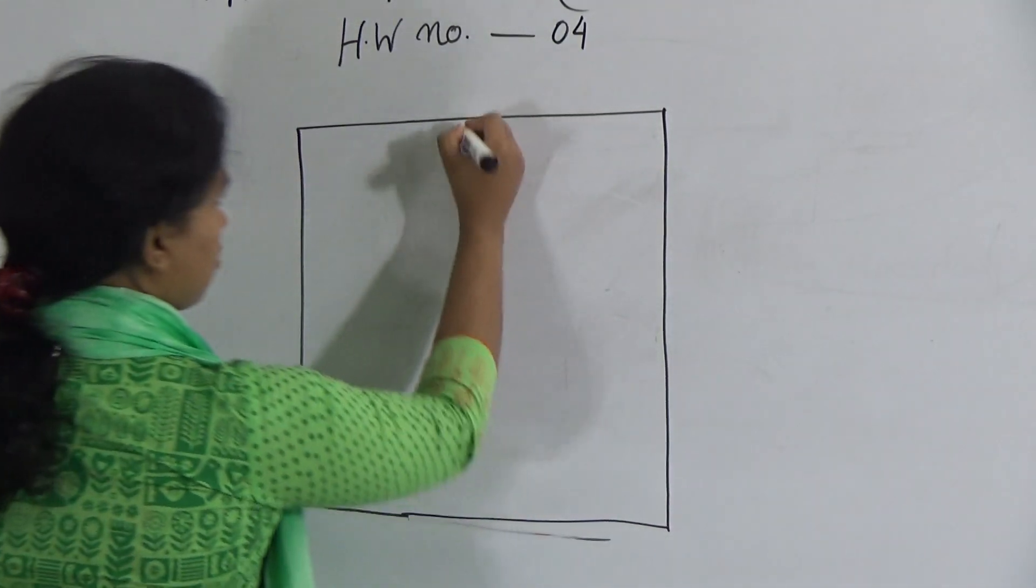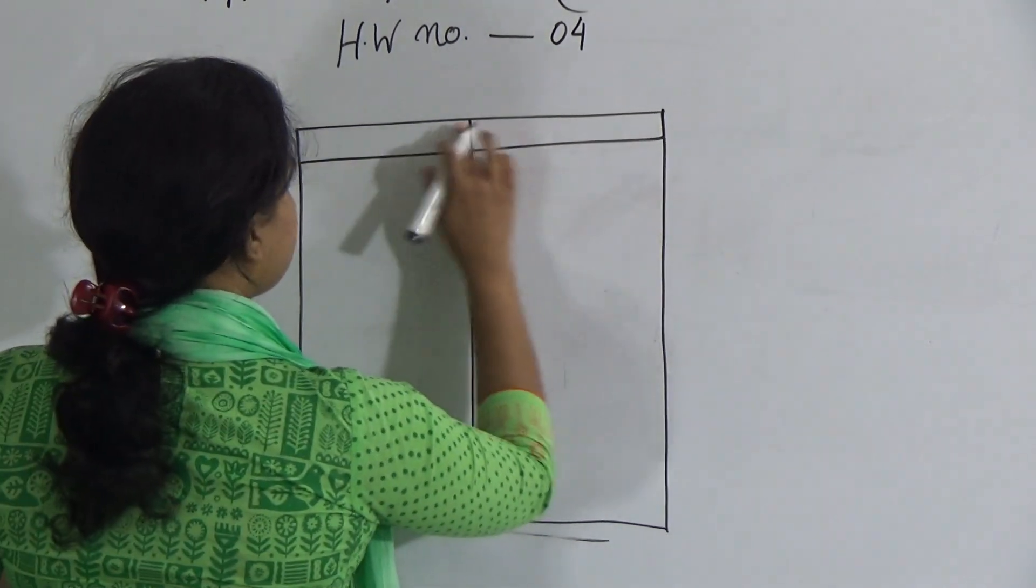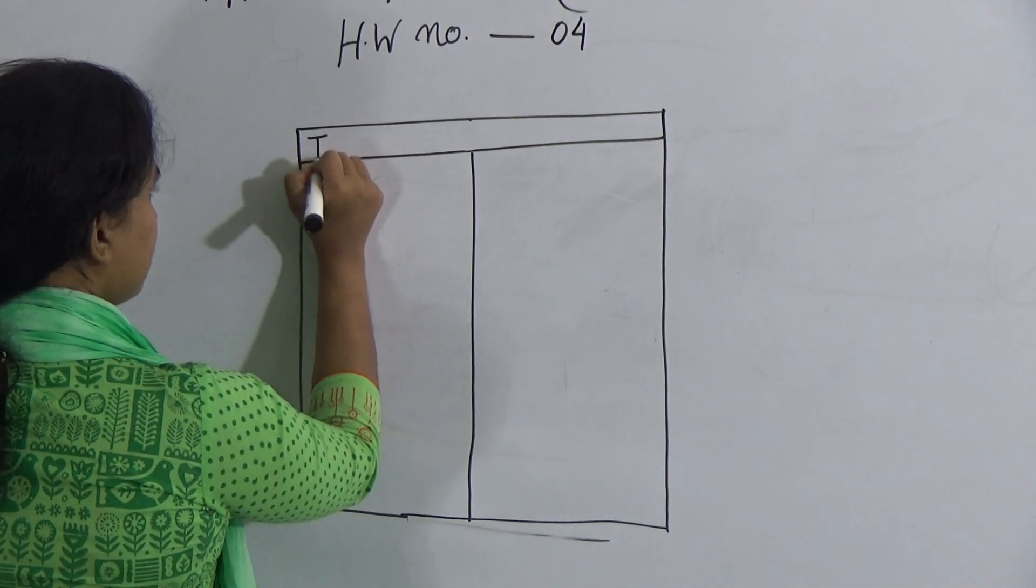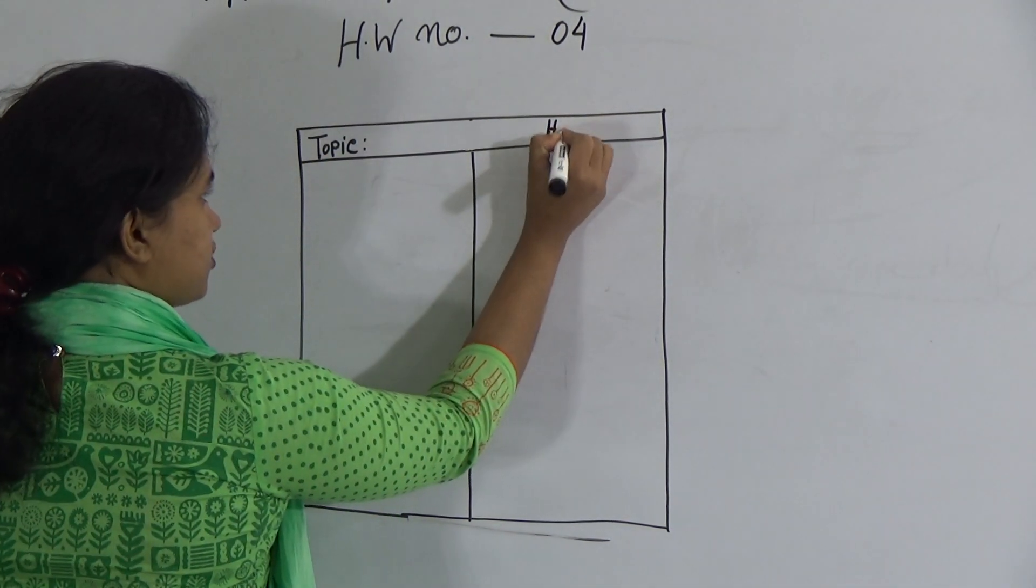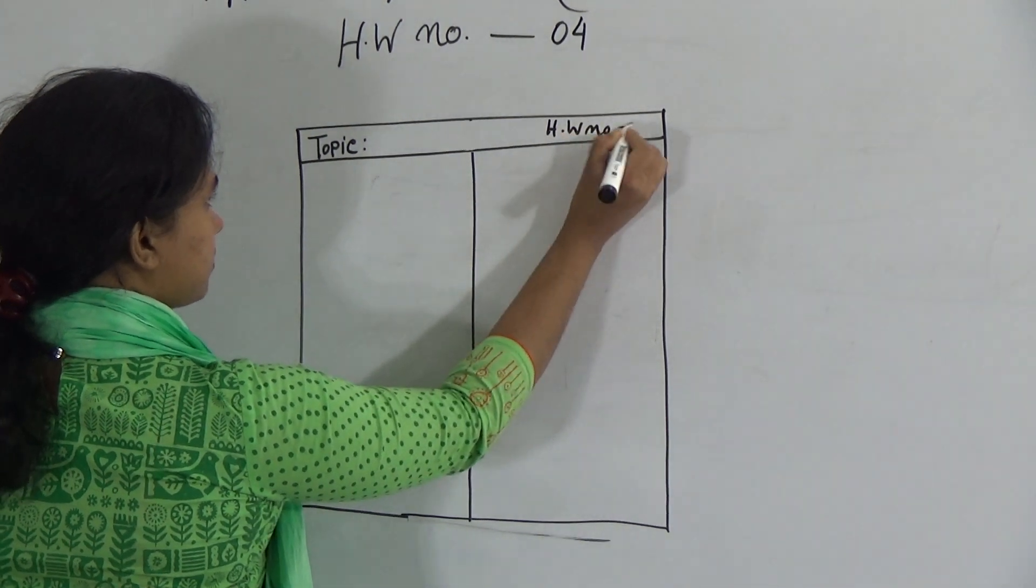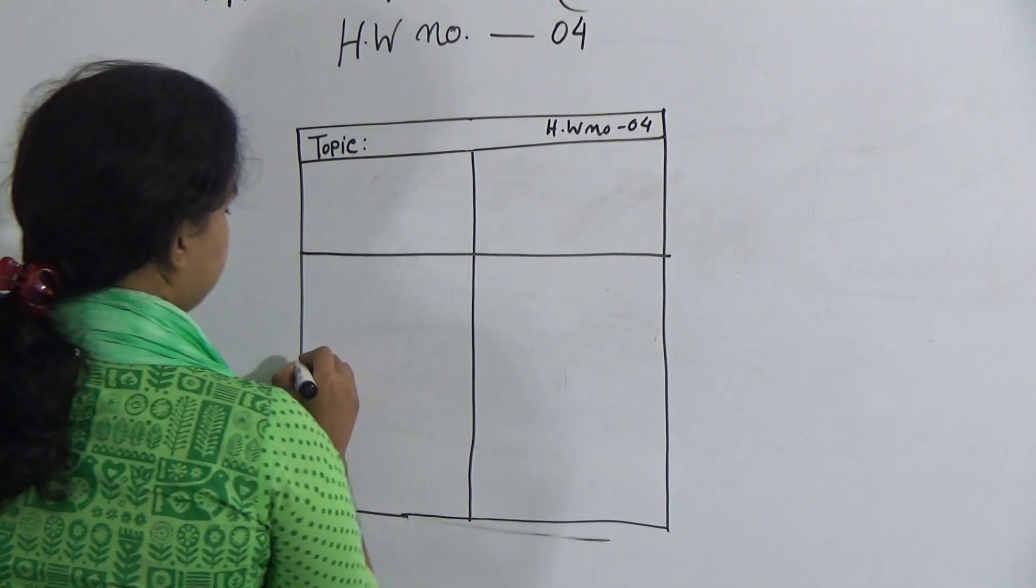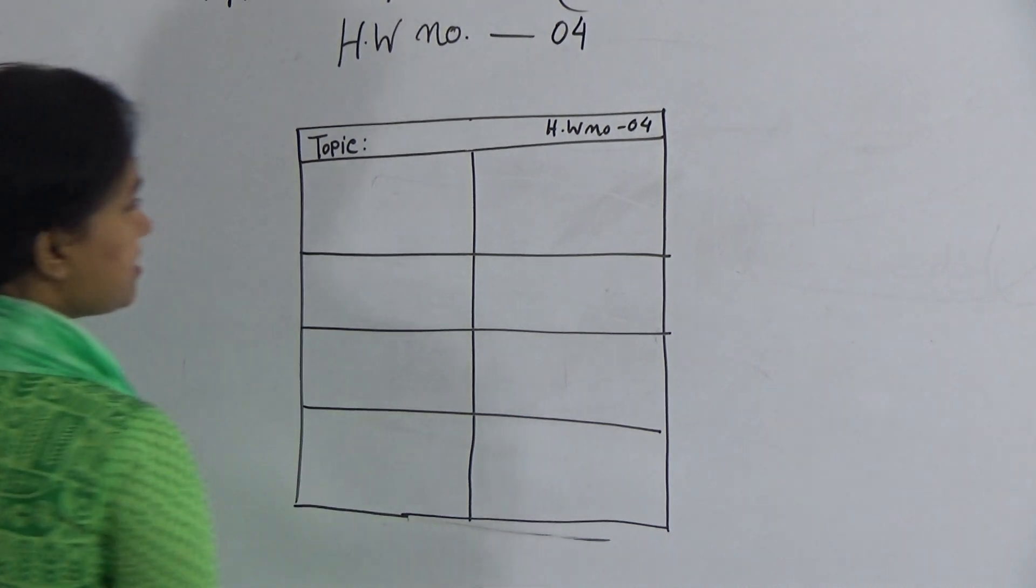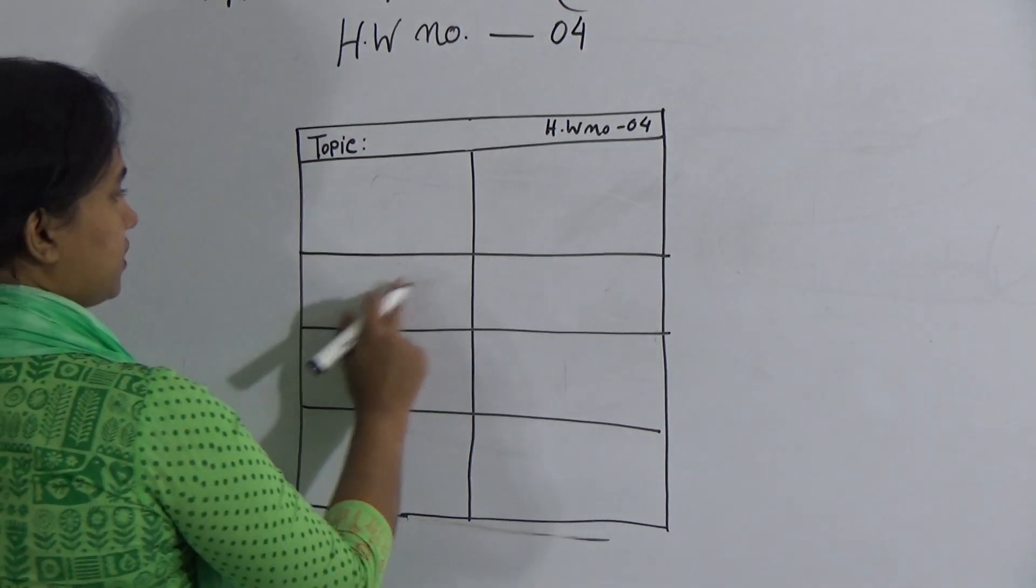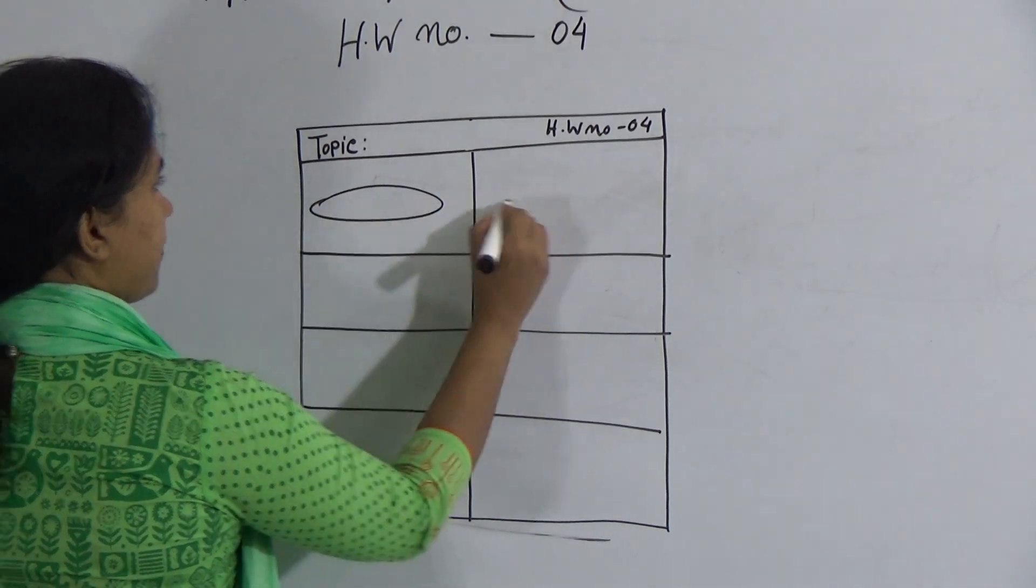Practice 6 oval at least. And first write down here topic. And HW number. This one is your form number HW. And draw. At least 1, 2, 3, 4, 5, 6, 7, 8. 8 oval in a page.